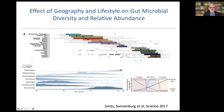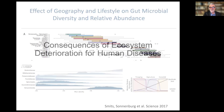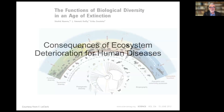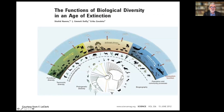There have been dramatic changes in microbial diversity, richness, and abundance in these ecosystems. What are the consequences of this ecosystem deterioration on human diseases? We have to realize that this decrease in ecosystem intactness has happened at all levels of life — both on land and sea — as shown on this tree of life, from microorganisms all the way to large animals.